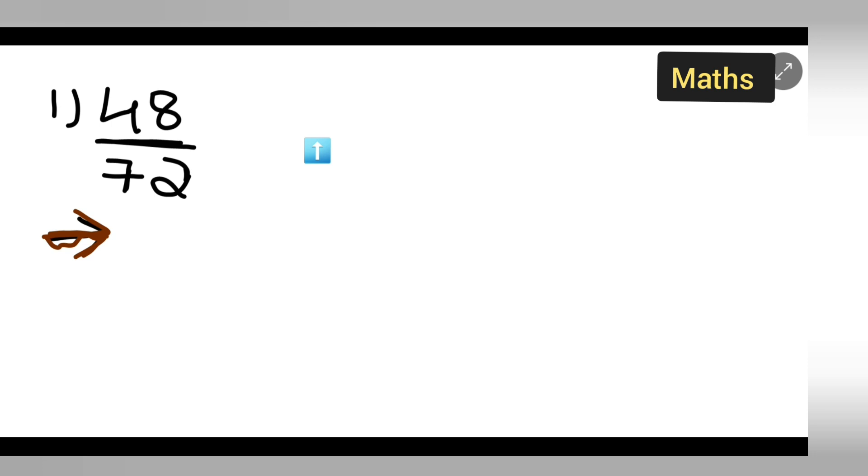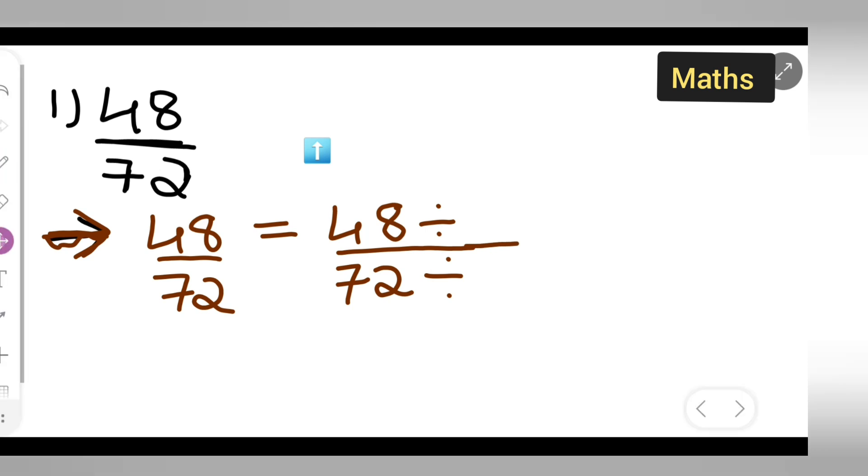So, you can write down 48 upon 72. Now, this is equal to what? 48 upon 72. I have to divide this in such a way. I have to reduce this, right? What I can do is, see, same 48 and 72, we both get it in the table of 8, right?